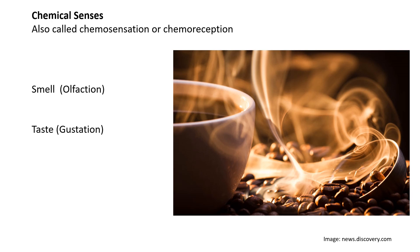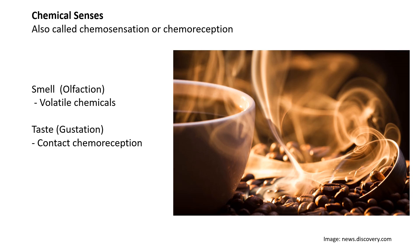But is that the only difference? The major difference is in how the chemical is delivered to the sensory organ. In the case of smell, we can detect volatile chemicals — the source need not come in contact with us; it can be far away. But in the case of taste, we can only sense something if we come in contact with it. So taste is also known as contact chemoreception — we have to put the source on our tongue to taste it.